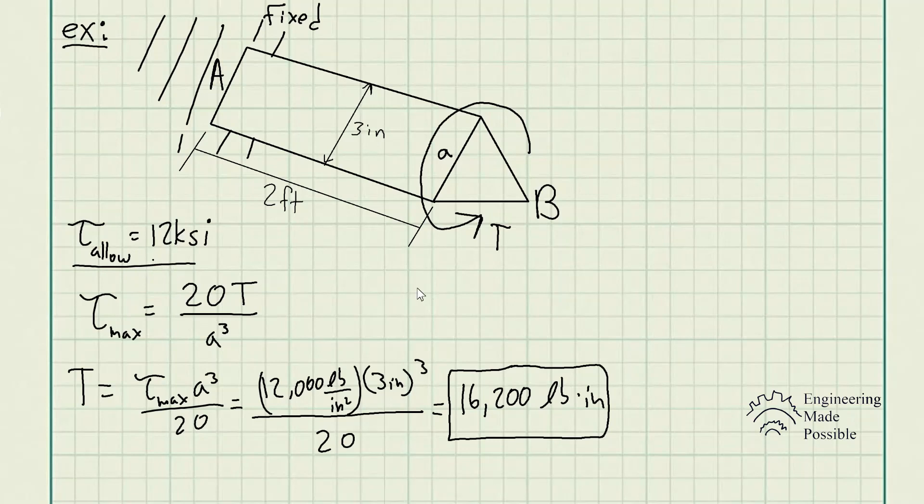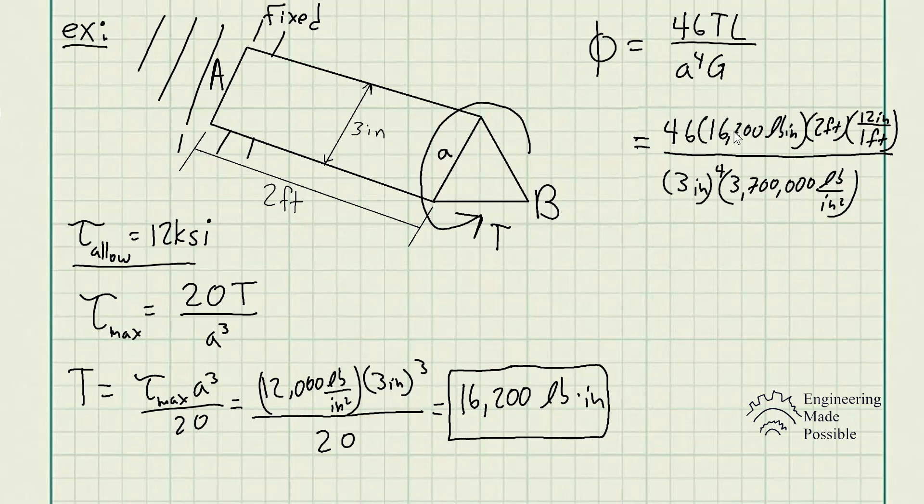So now let's go ahead and solve for the angle of twist. Using the equation we wrote previously, the angle of twist is 46 times the torque times the length of the shaft divided by A to the fourth and the shear modulus of elasticity. So we get 46 times 16,200 pound inch times 2 feet.